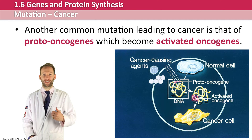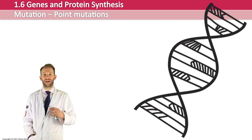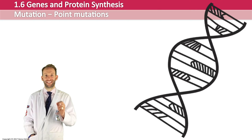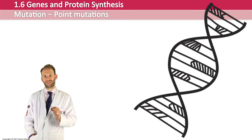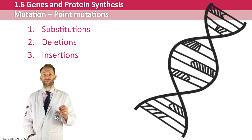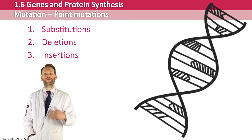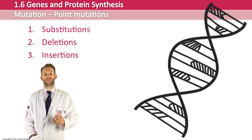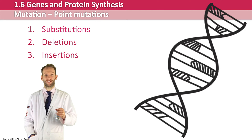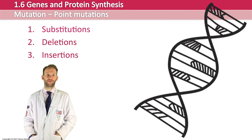Gene mutations, also known as point mutations, usually occur when a nucleotide isn't properly copied during transcription, or due to exposure from a mutagen. There are three different types of point mutation: substitutions, deletions, and insertions. Mutation can lead to an altered primary structure of a protein — if you change the base sequence, you change the amino acids, which can completely change the final 3D shape and function of a protein. A mutation could also cause a codon to become a stop codon, prematurely stopping translation so the polypeptide is completely changed.